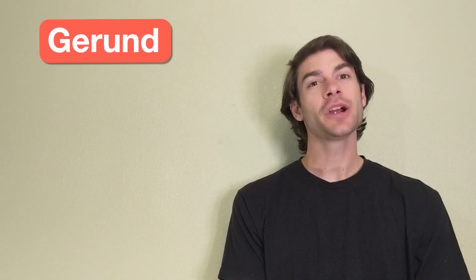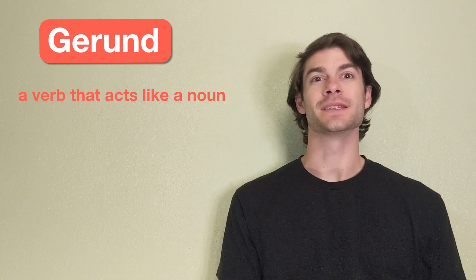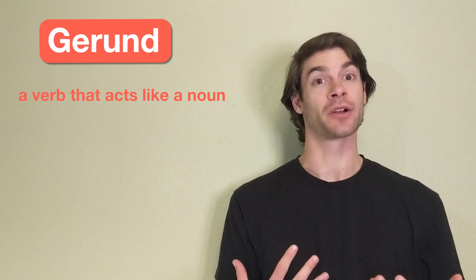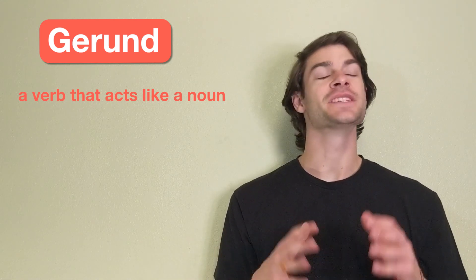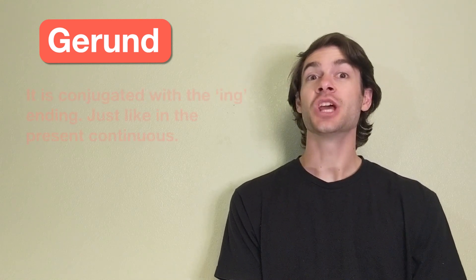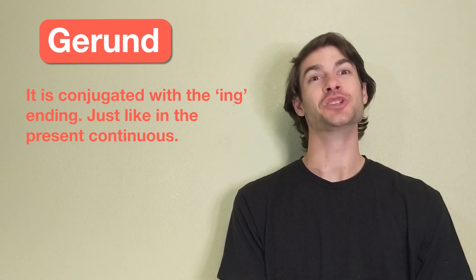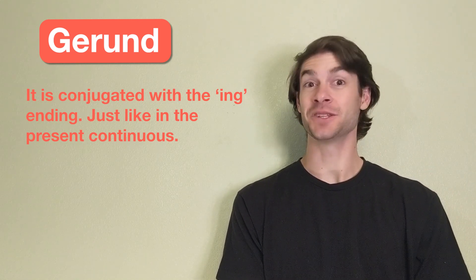Let's start with what a gerund is. A gerund is a verb that acts like a noun. This means that we often use a gerund in a sentence the same way we would use a noun. A gerund is conjugated with the ing ending, just like in the present continuous.